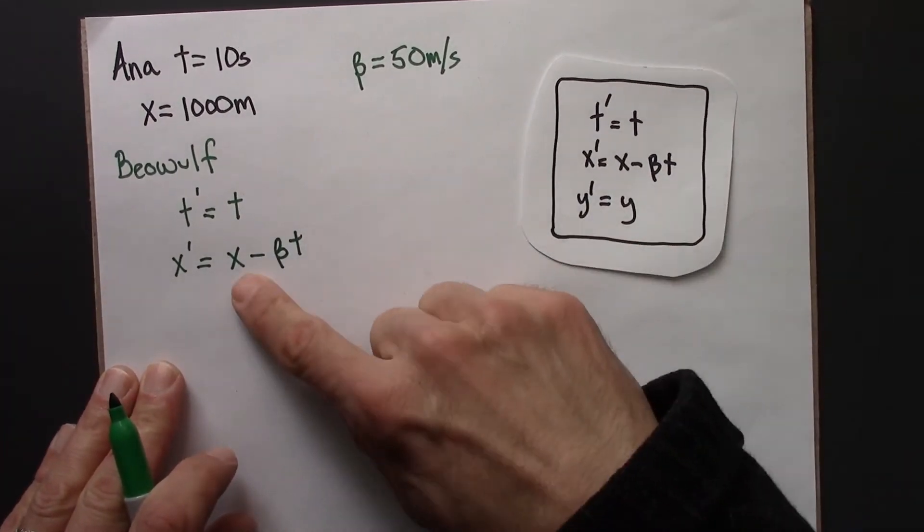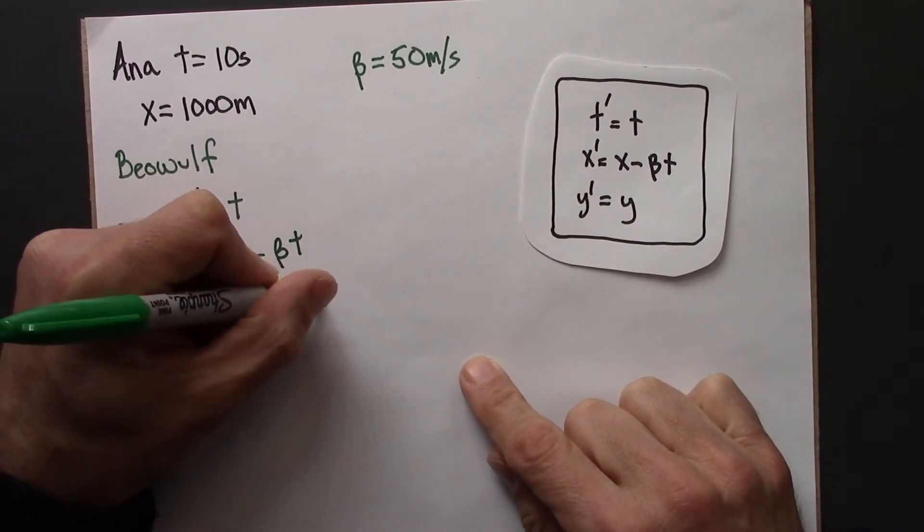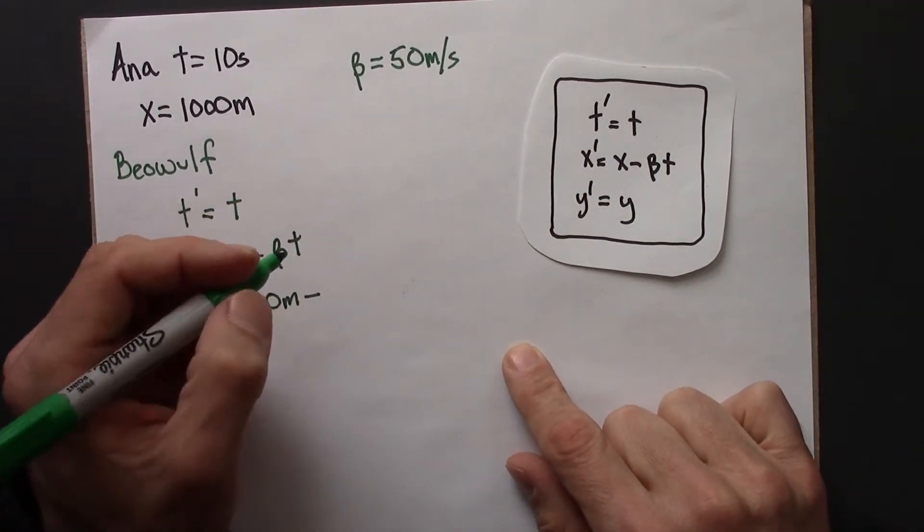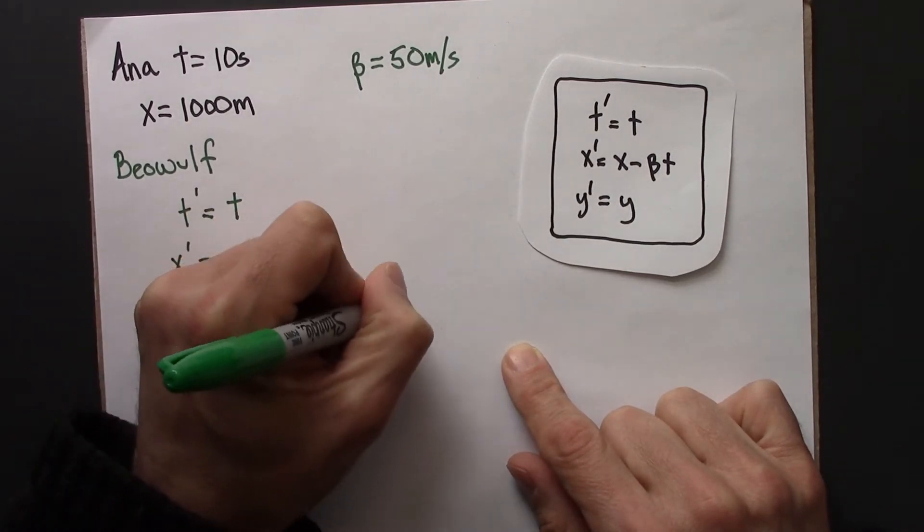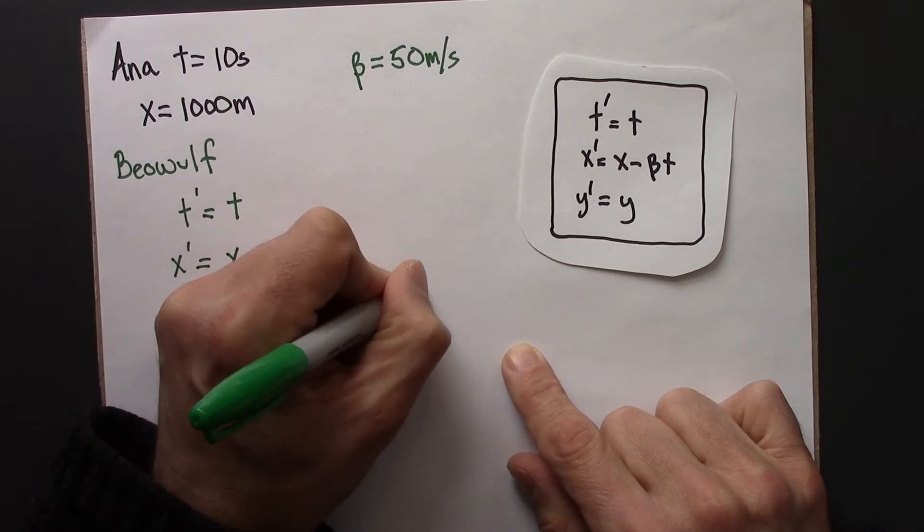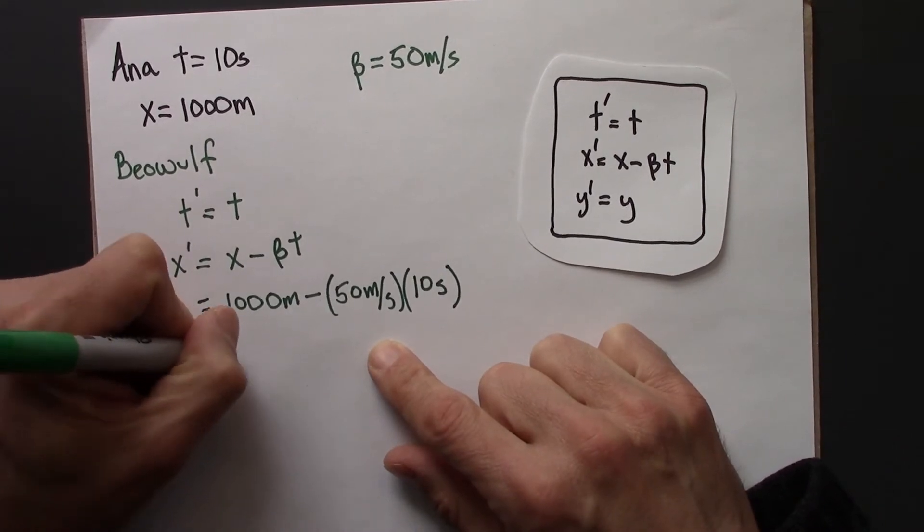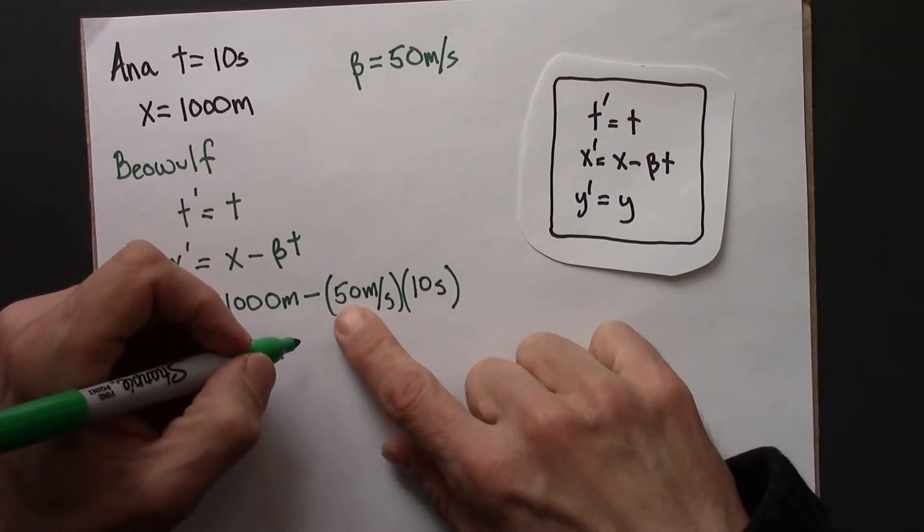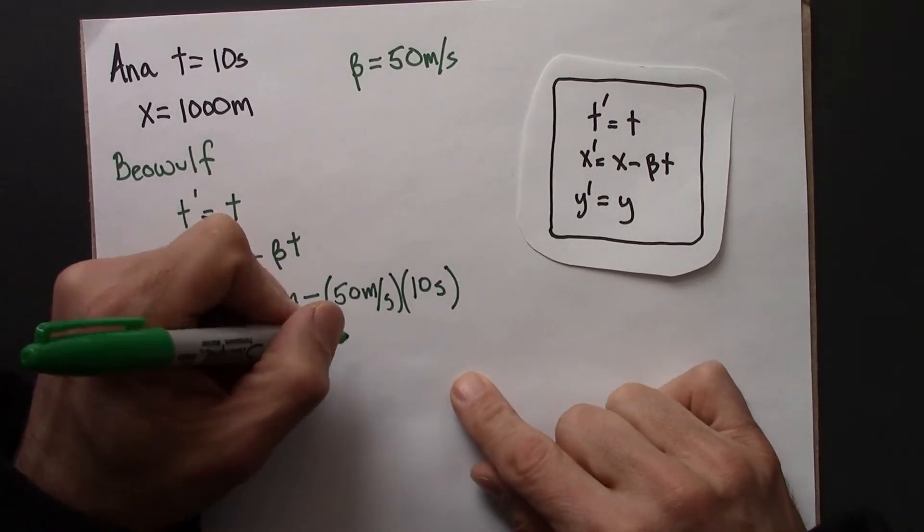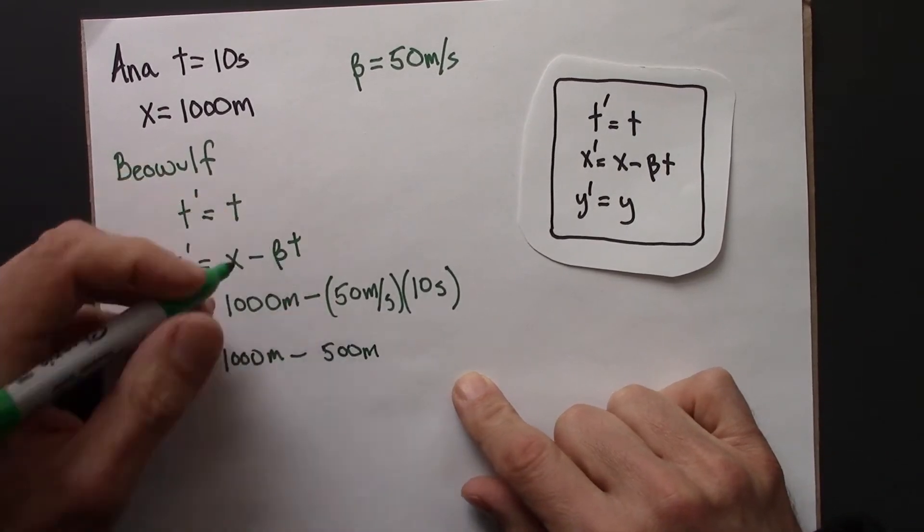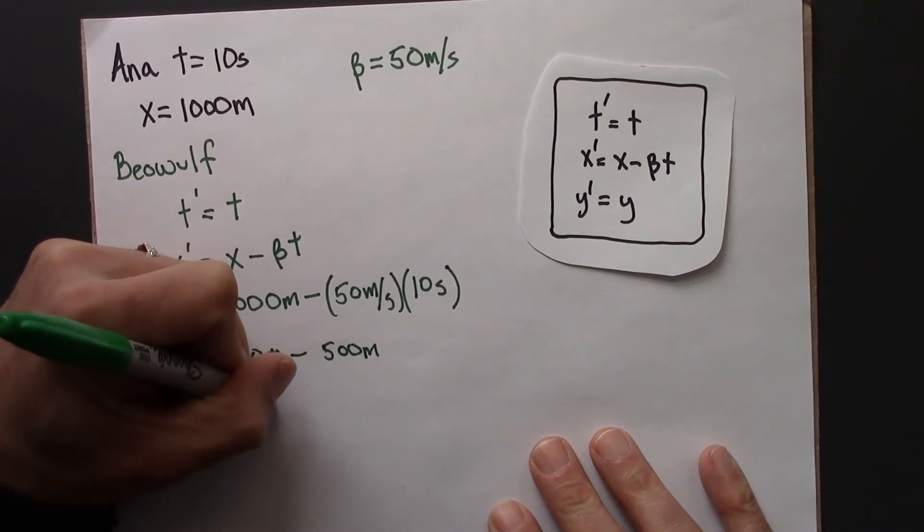So that's X minus beta T. And let's plug in. So X, that's Anna's X, that's 1,000 meters. Beta is 50 meters per second. The time of the event is 10 seconds. So, let's see. I've got 1,000 meters. 50 times 10 is 500. Meters per second times seconds is meters. So, 1,000 minus 500 is this.